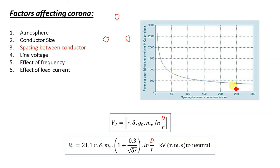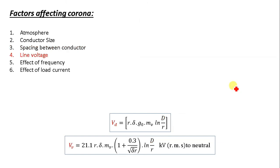The next factor is line voltage. Line voltage greatly affects corona. At low voltage there is no change in the condition of air surrounding the conductor and no corona is formed. However, if the line voltage is such that the electrostatic stress developed at the conductor surface makes the surrounding air conducting, that is where corona forms.